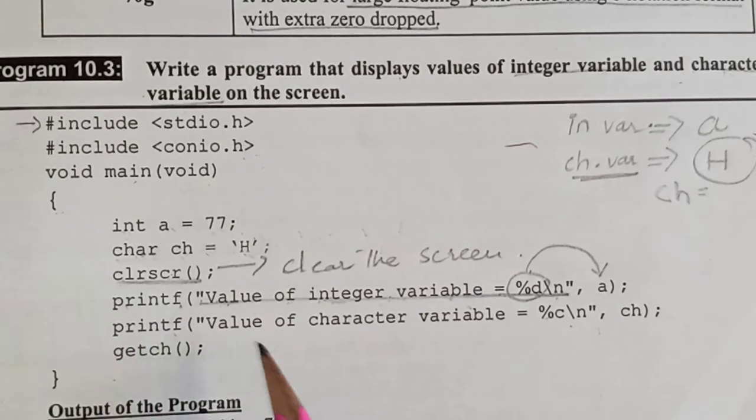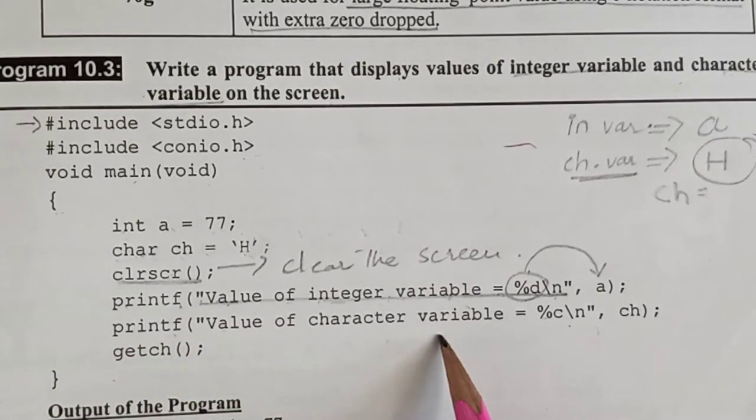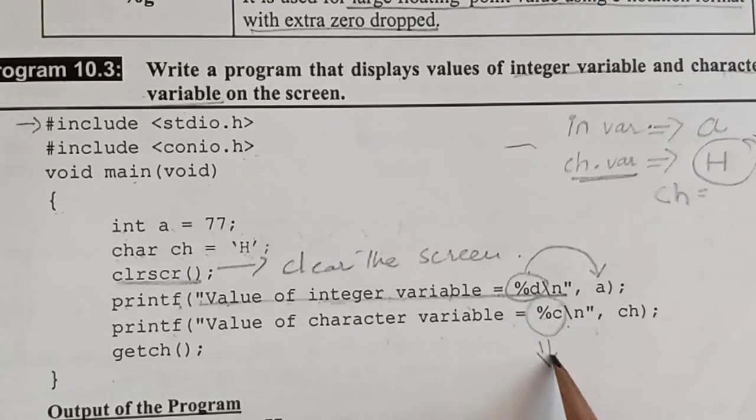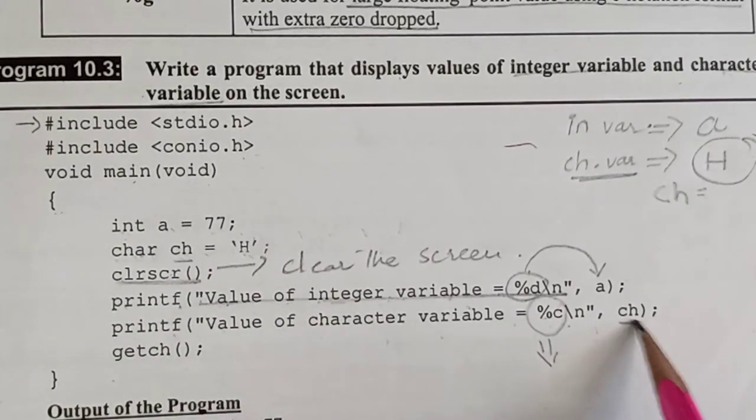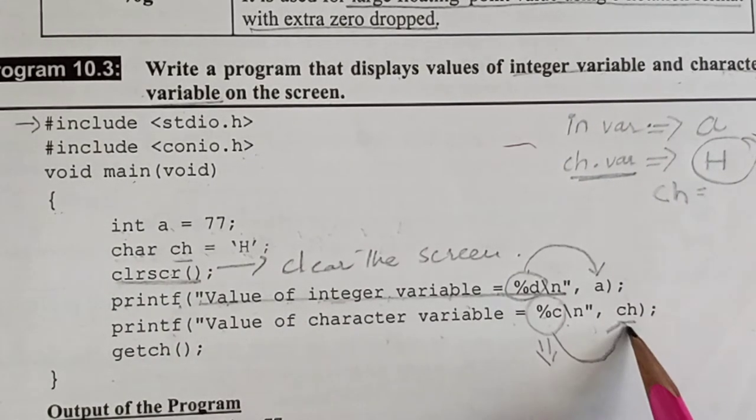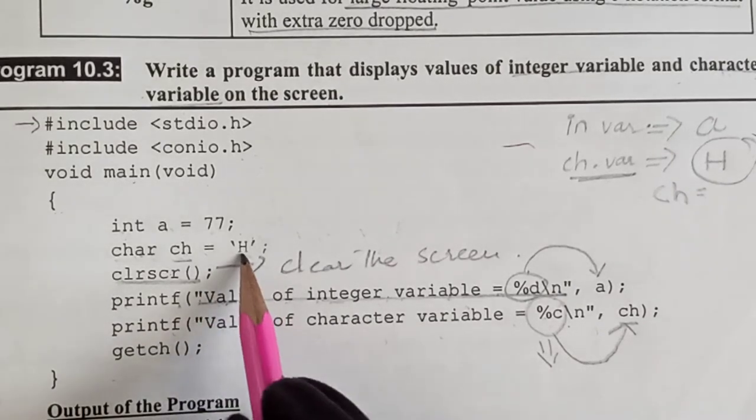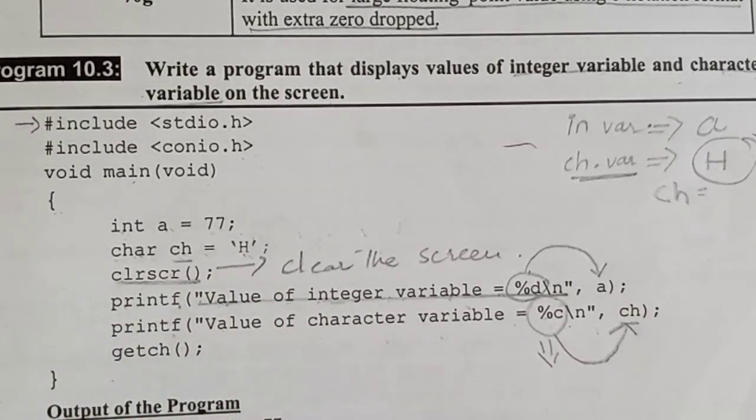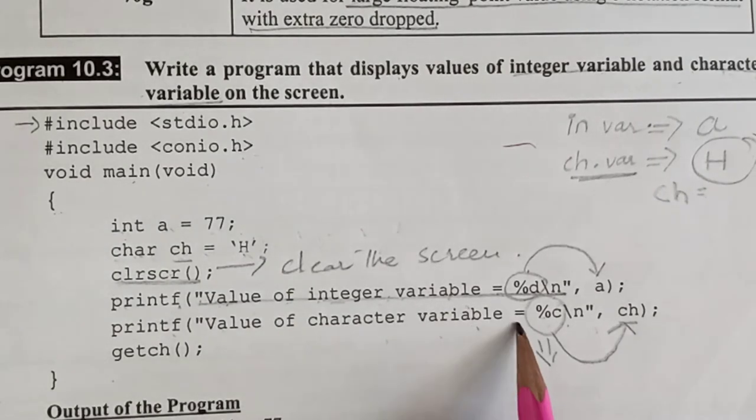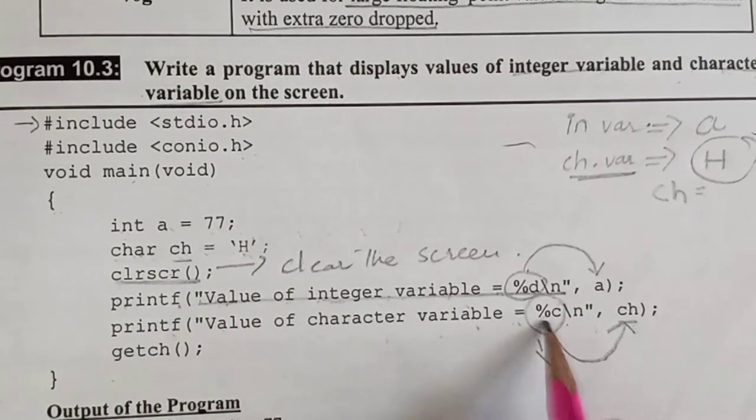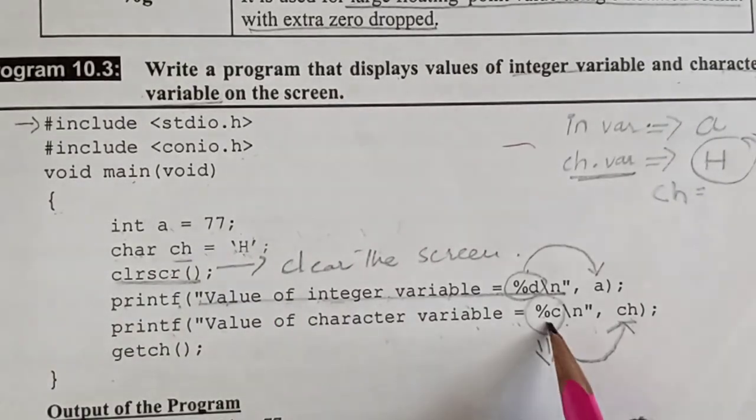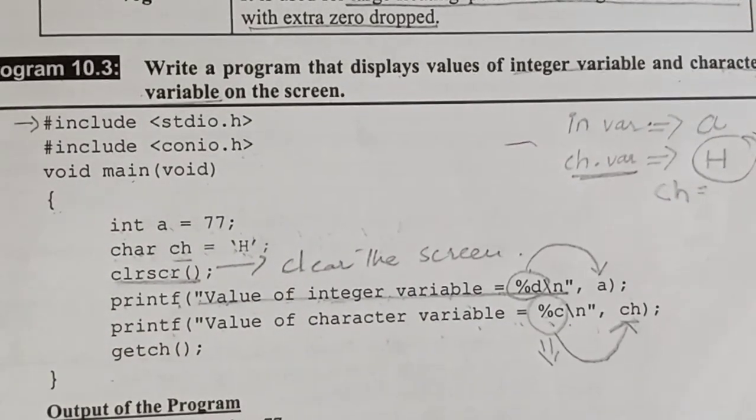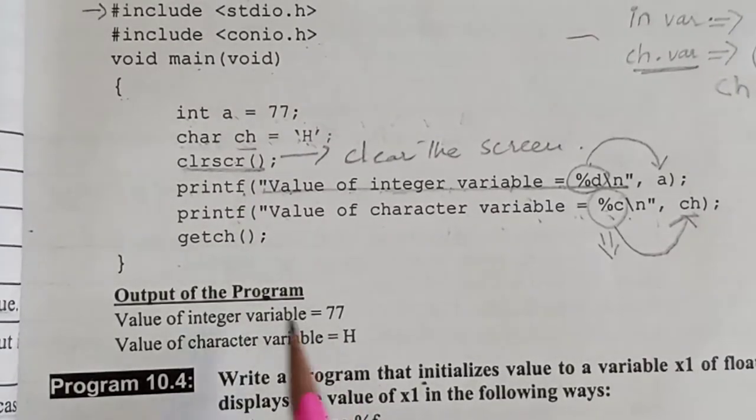In the next line, printf value of character variable equals %c. What is the sign of %c? That is for character variable. Which character variable? CH. We have given CH. What will we do here? H. How will this output be displayed? Value of character variable equals and what value of %c will be put? CH. And CH is H, so here will be H. Now let's look at this output.